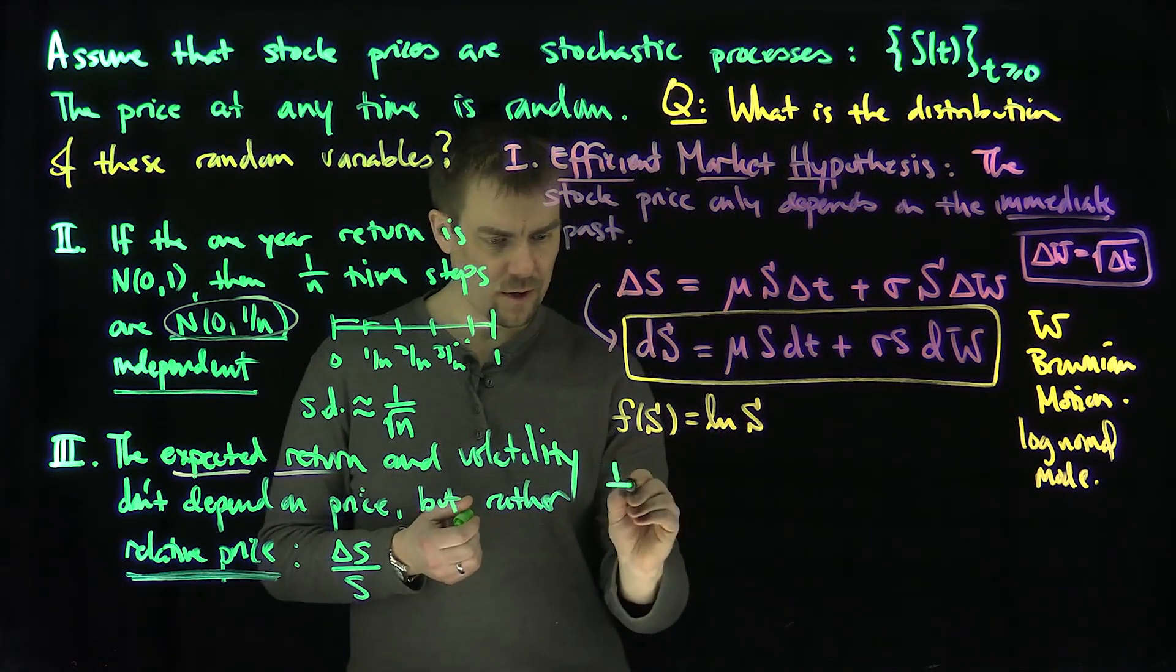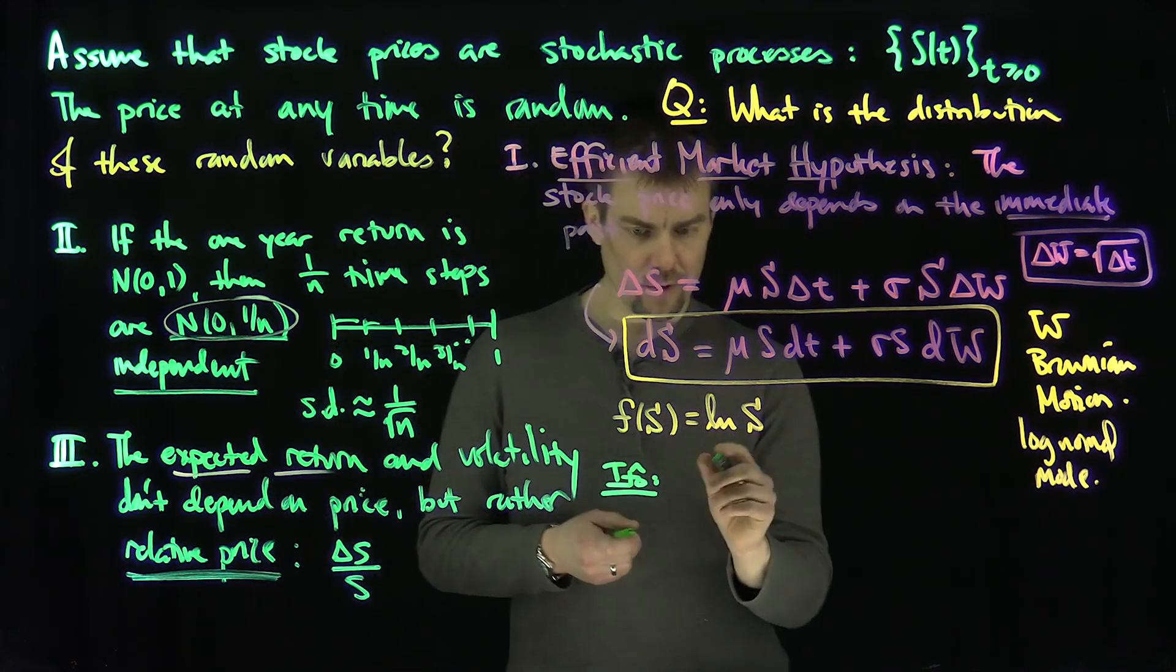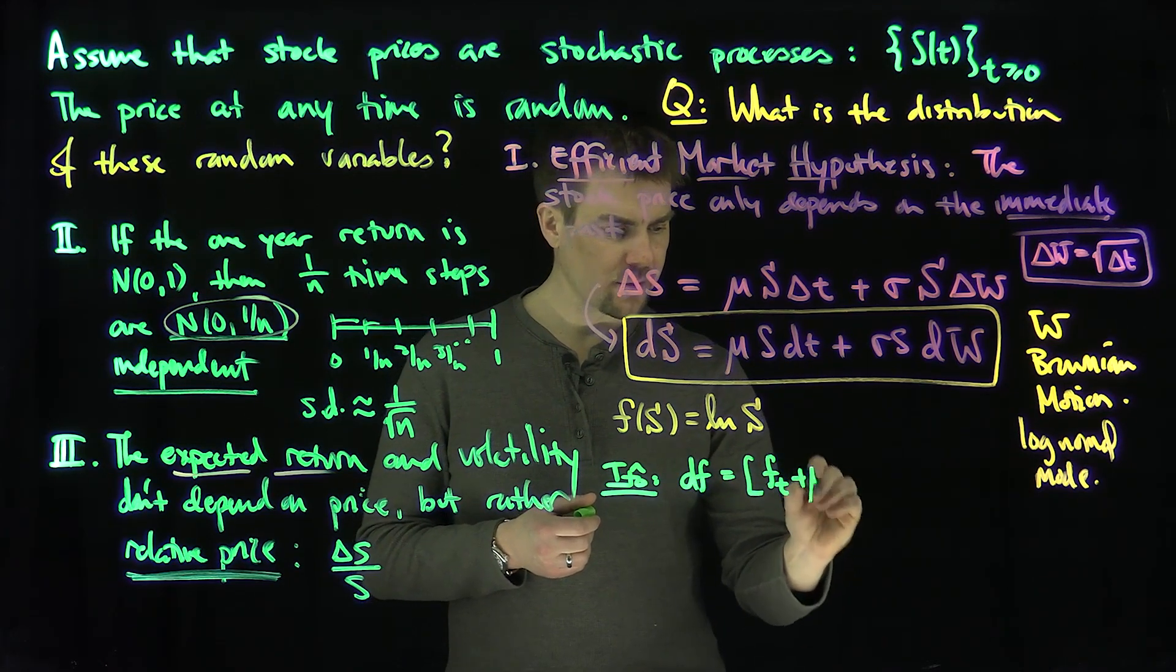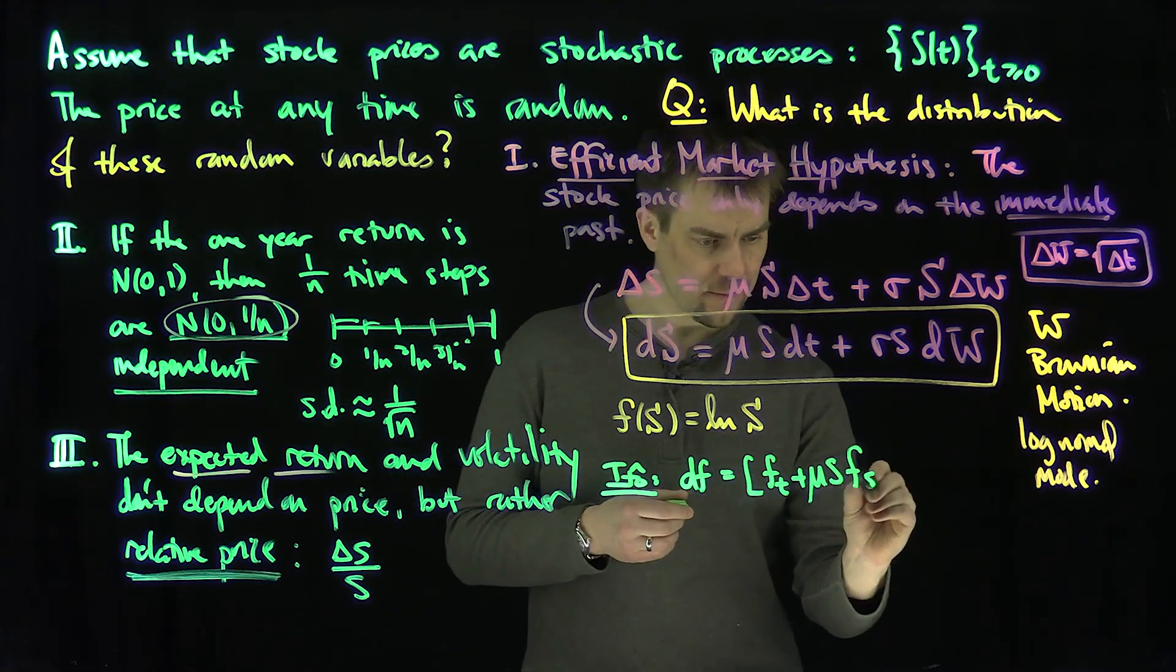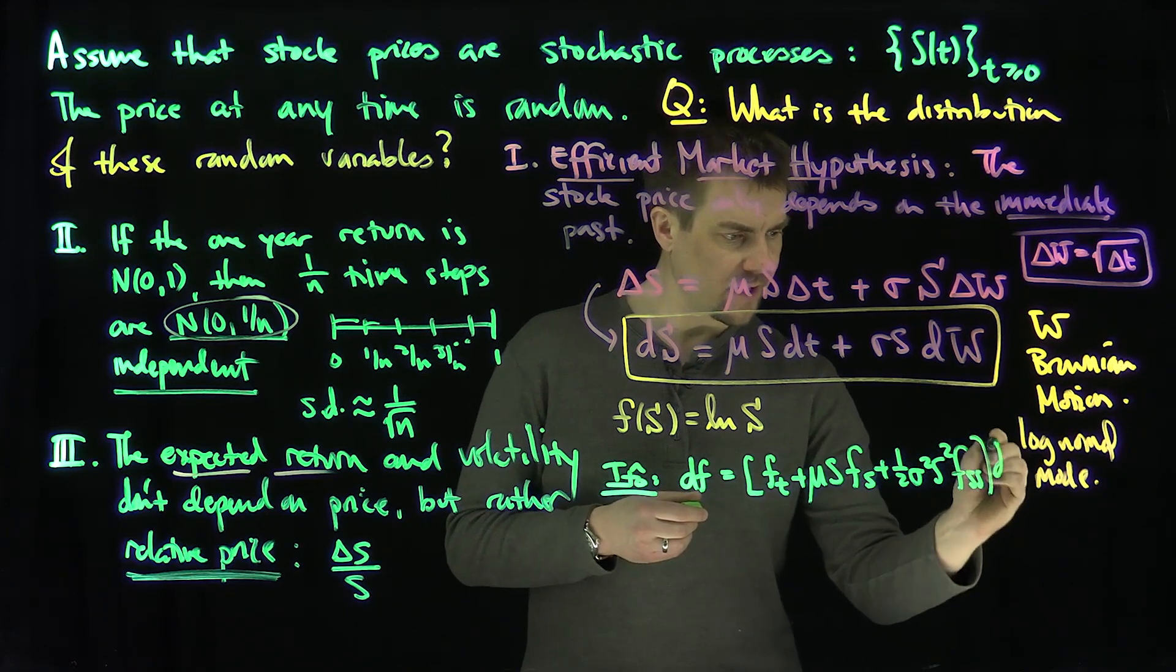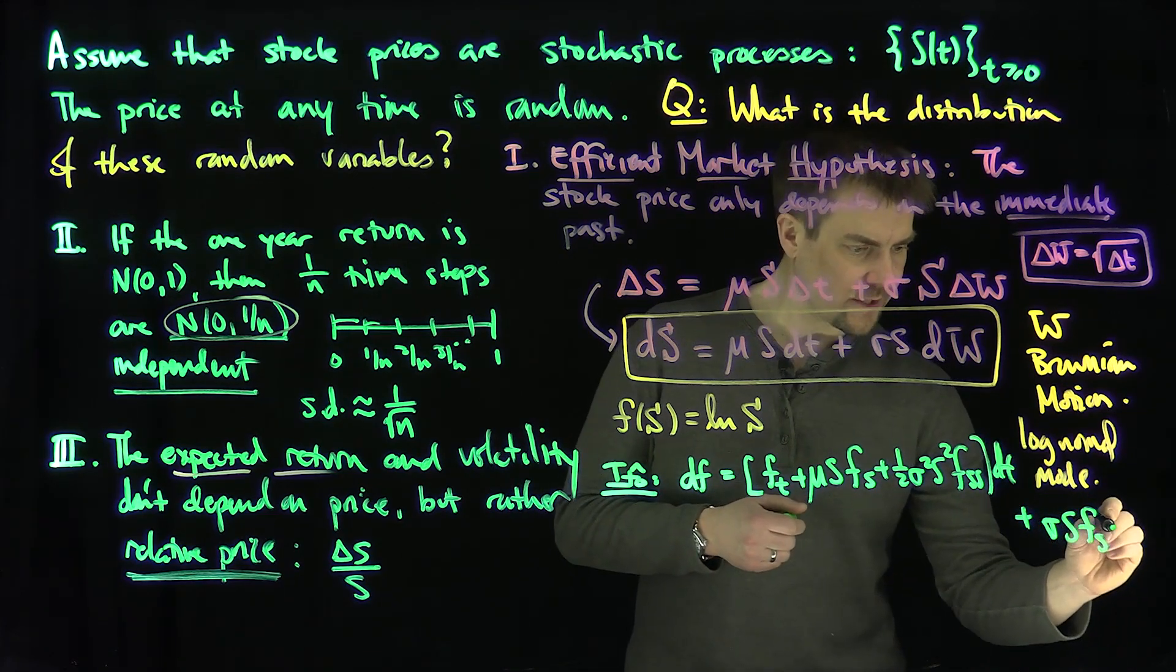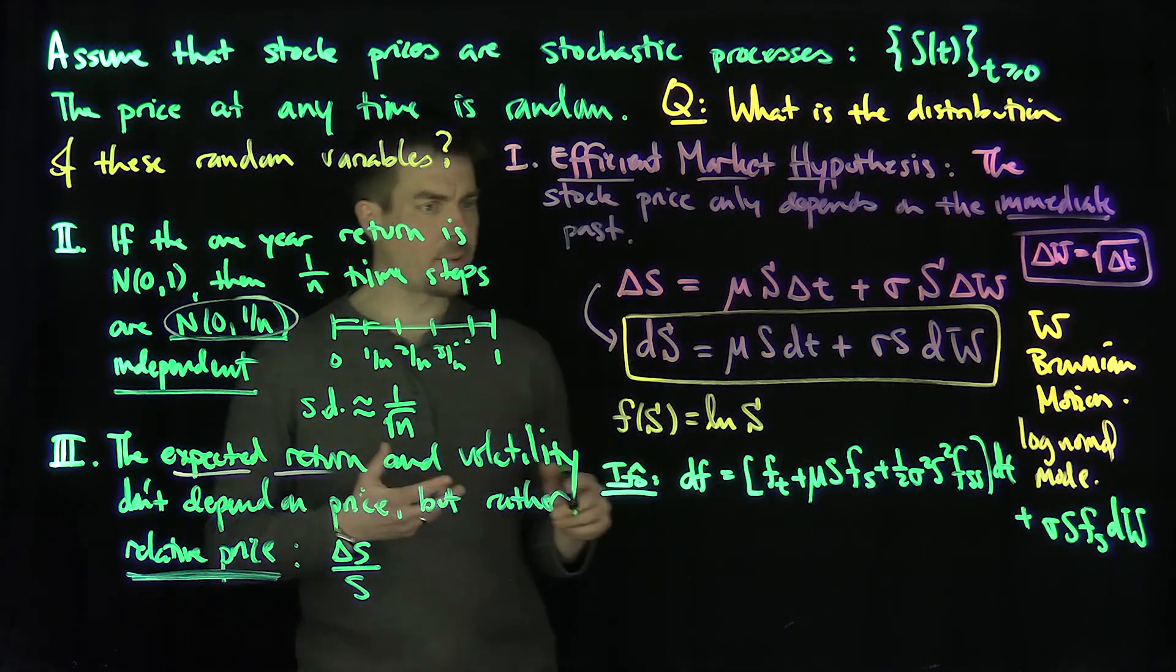Ito's formula says that dF satisfies F_t plus mu S F_S plus one-half sigma squared S squared F_SS dt—that's the deterministic component—plus the random component, which is sigma S F_S dW.